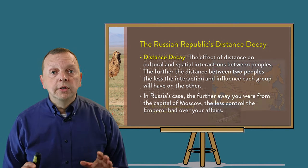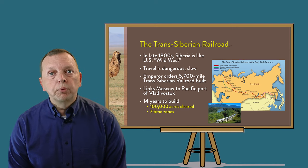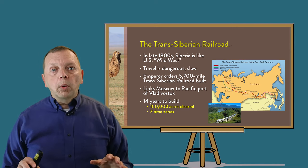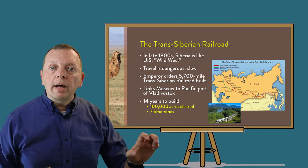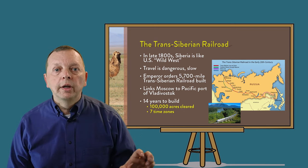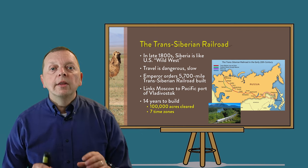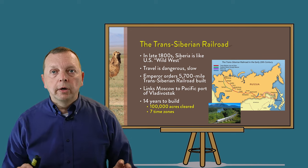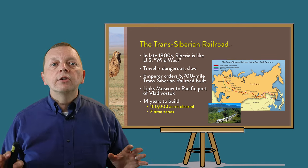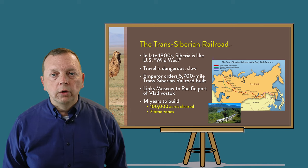Another challenge isn't due to the physical environment, but rather distance. Due to its size, Russia proved very difficult to manage — this is called distance decay. To overcome this distance decay, in 1891, Russian Emperor Alexander III directed for a railroad to connect the capital of Moscow to the Pacific port city of Vladivostok. After 15 years of construction, the Trans-Siberian Railroad was completed, and today it is the world's longest railway.